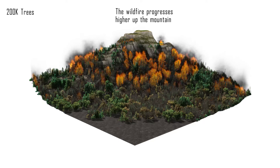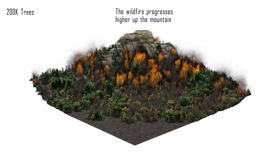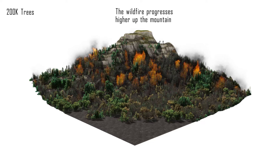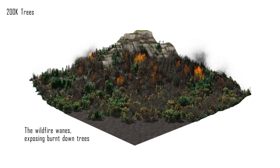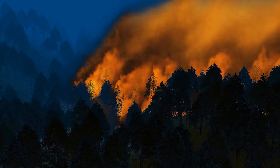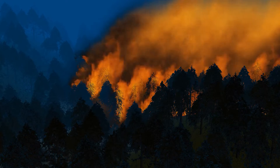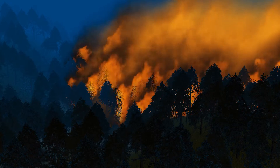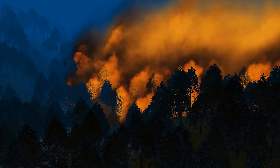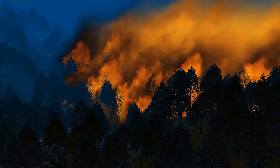Finally, as the fuel distribution becomes sparser higher up the mountainside, the wildfire wanes and reveals the damage caused to the ecosystem. Our complex representation of vegetation, coupled with an efficient combustion model, allows the interactive exploration of wildfire phenomena at unprecedented detail.